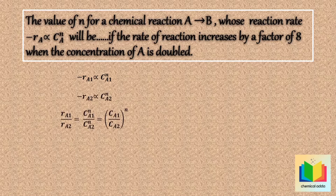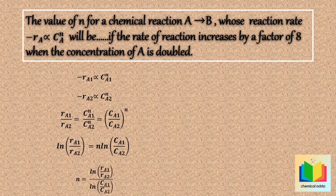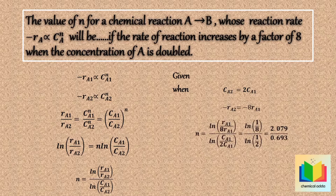Taking the natural log, we get ln(rA1/rA2) is equal to n times ln(cA1/cA2), so n equals ln(rA1/rA2) divided by ln(cA1/cA2). Now given that when cA2 is equal to twice cA1, minus rA2 is equal to minus 8 times rA1. Substituting: n = ln(rA1 / (8·rA1)) divided by ln(cA1 / (2·cA1)).